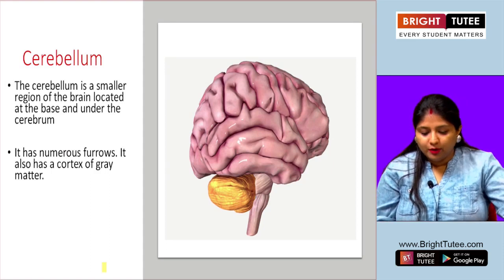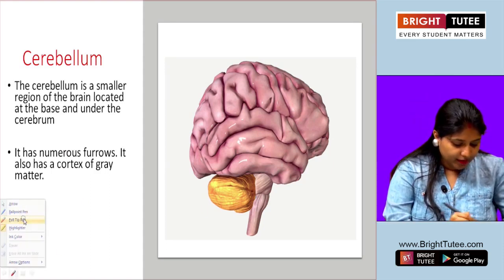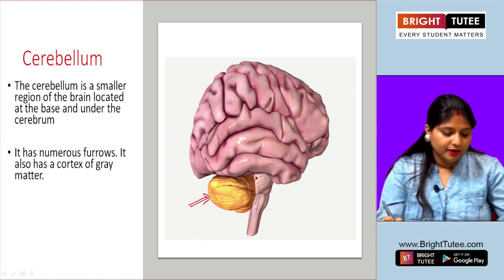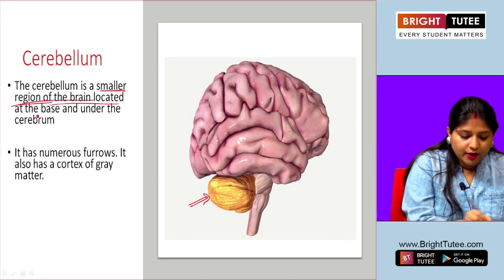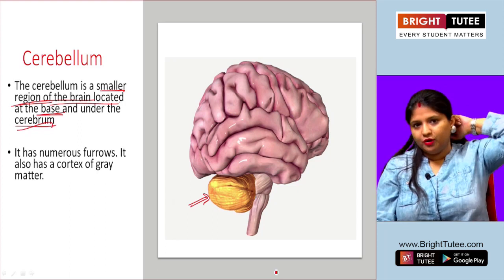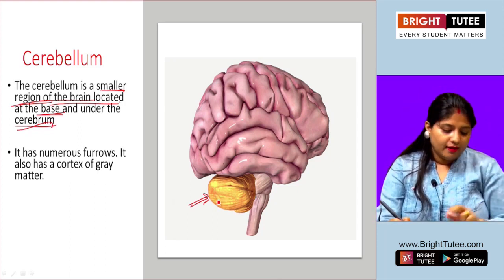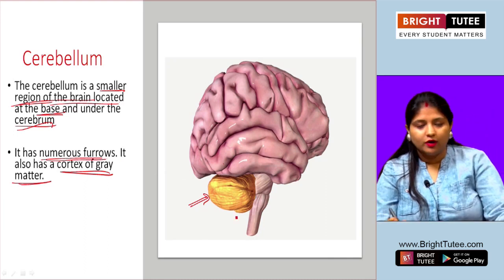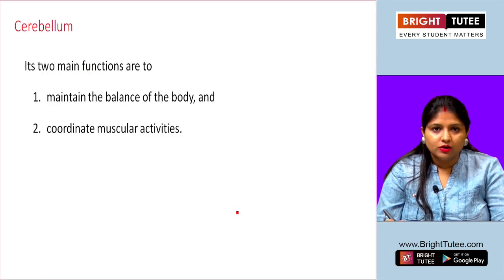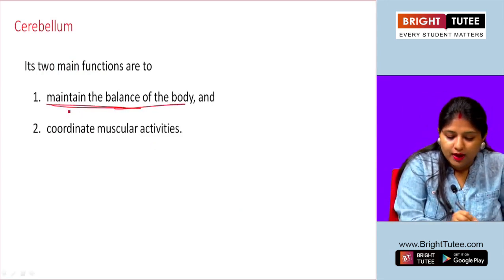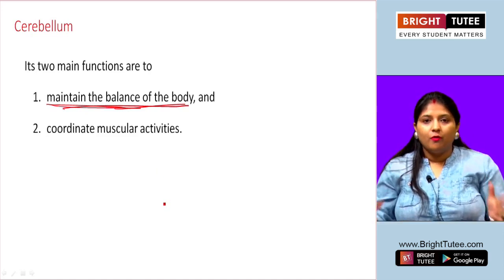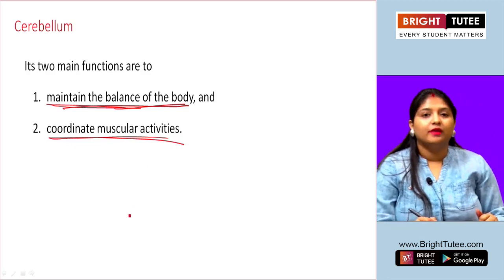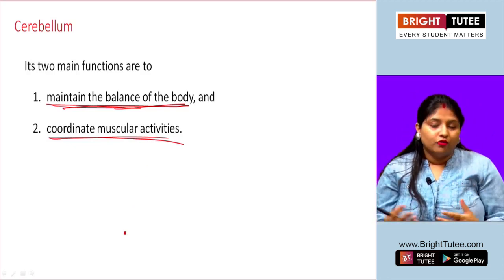The next important part of the brain is the cerebellum. It is a smaller region located at the base and under the cerebrum, with numerous furrows and a cortex of grey matter. The cerebellum has two main functions: first, to maintain the balance of the body while walking in a straight line; and second, to coordinate muscular activities like running and playing.